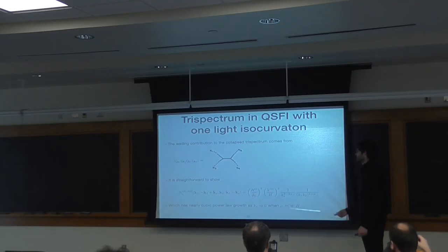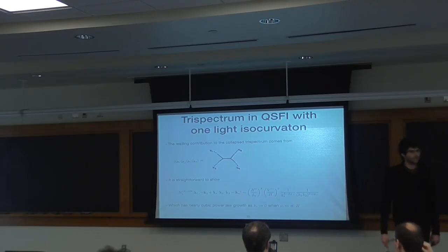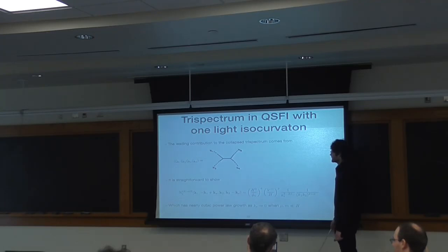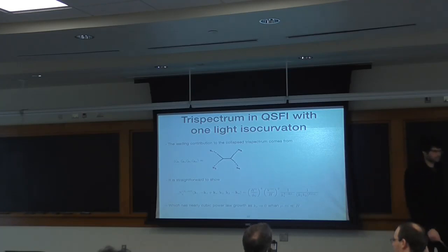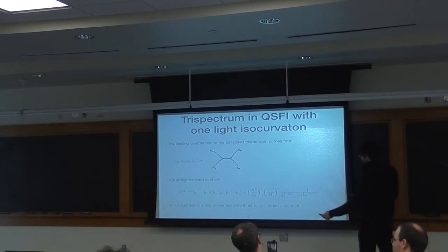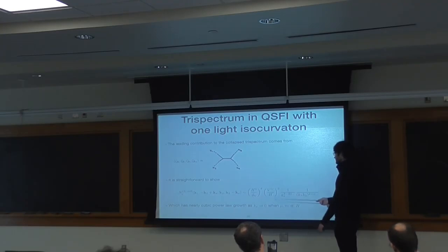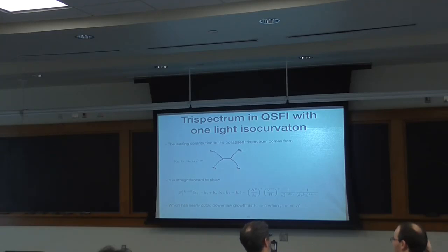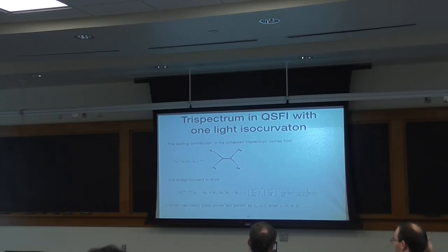If you can choose the mass to be small enough, you can get arbitrarily close to cubic growth as Ks goes to zero, though it can't grow faster than cubic. So this is kind of the punchline: this nearly cubic power law growth in the squeezed bispectrum and collapsed trispectrum could be observed in large-scale structure. The matter overdensity is related to the scalar curvature perturbation through a linear relationship involving the transfer function, which tells you how the gravitational potential evolves between radiation domination and today. If we see sizable non-Gaussianities in zeta, we might be able to see sizable non-Gaussianities in the matter overdensity delta, which we could observe.